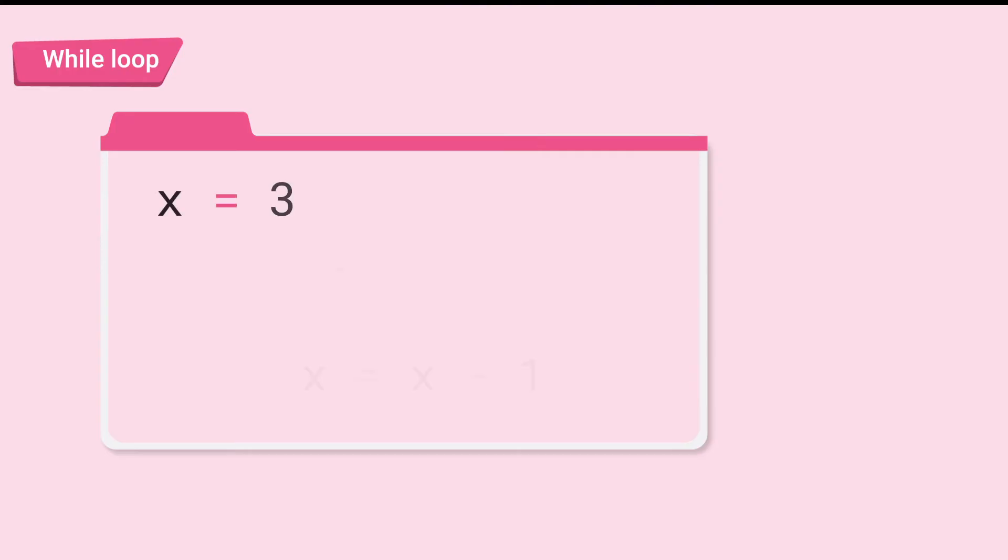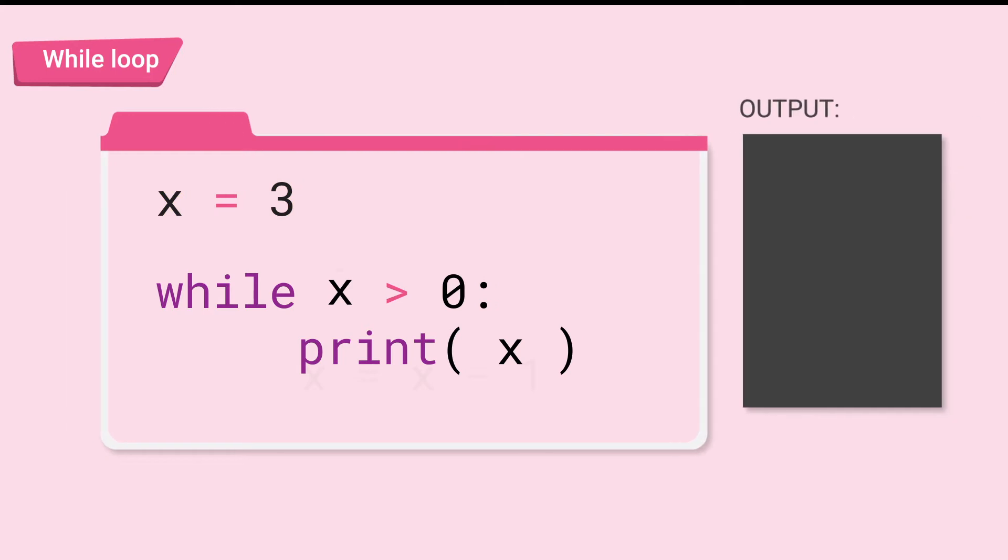Next, let's try out the loop. If x is 3, what is the output? It'll print 3 forever. Why is that?